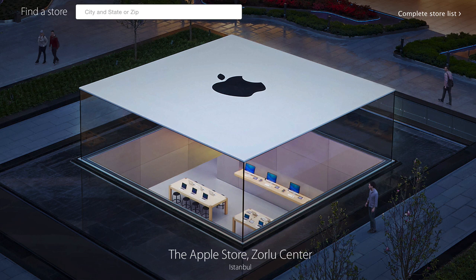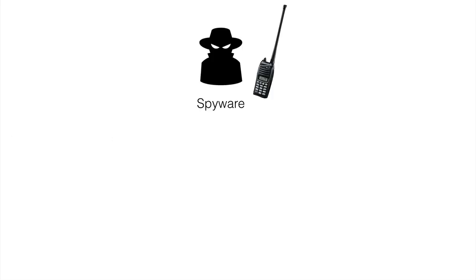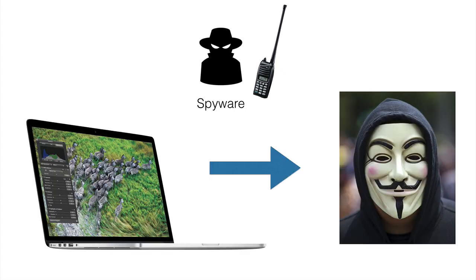I went to an Apple Store and asked the representative how I could get it off my computer. He said there really isn't any software that can remove spyware, but he did have a solution. He explained that spyware is kind of like a spy on your computer with a radio, which means it can transmit your screen to somewhere else — transferring your screen information to someone else. Someone in a mask is my representation of the spy, looking at your screen from anywhere in the world. It is definitely concerning.